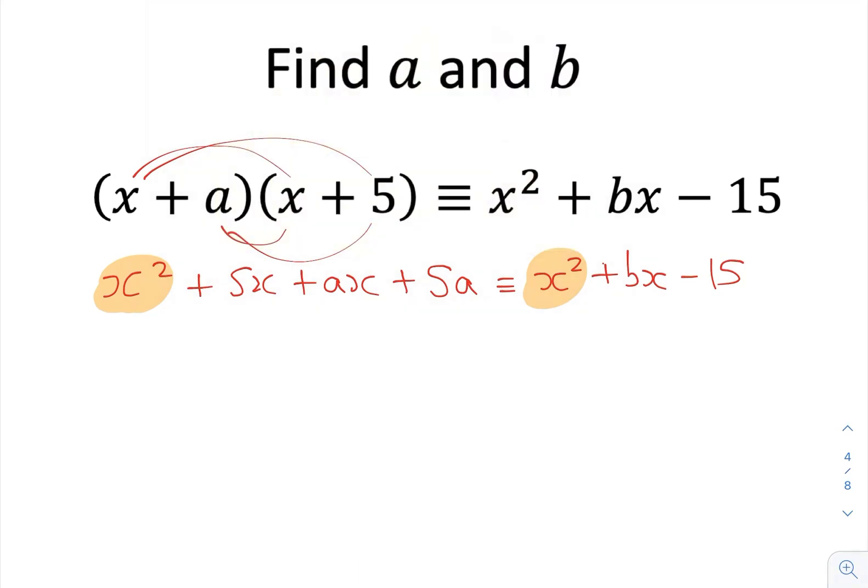The next part to look at will be the terms with an x in. So if I look at these here, 5x and plus ax, I'm going to in a minute equate these to this bx on the right-hand side. But look at what will happen when I try and do something here. 5x plus ax equals bx. Well, because there's two unknowns in this single equation, a and b, I'm not going to be able to solve this yet. I need to know what either a or b are. So I can't actually do anything with those yet.